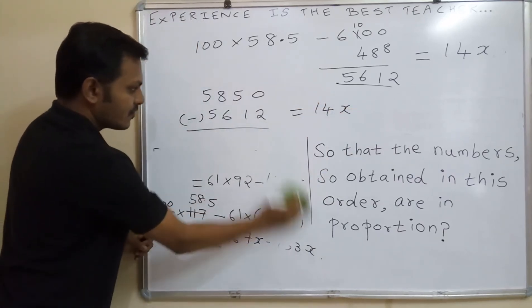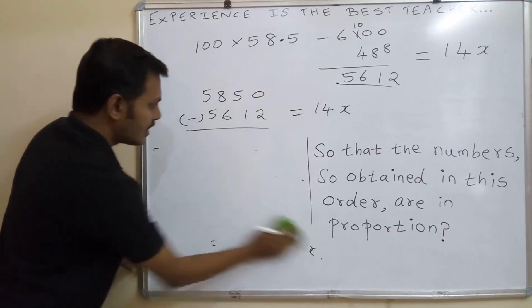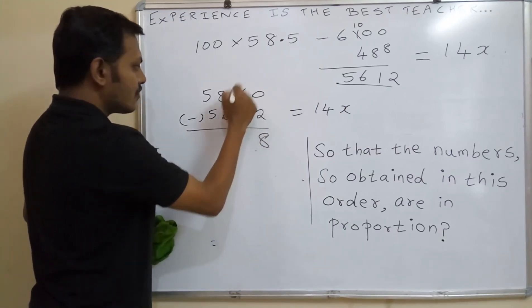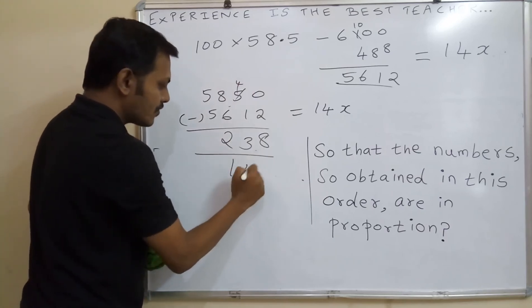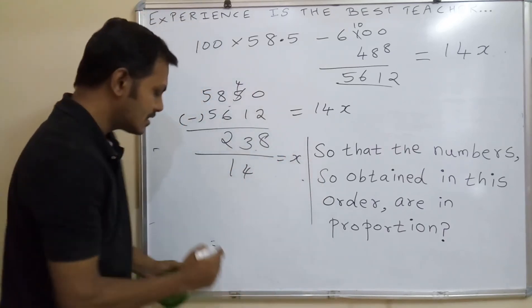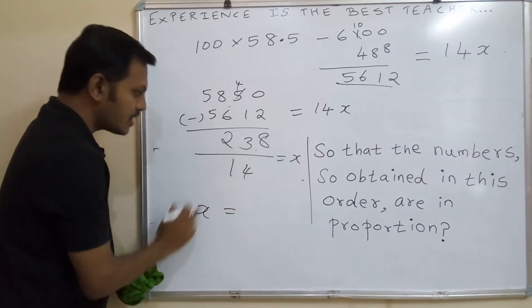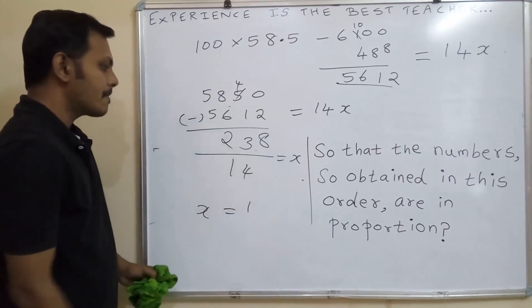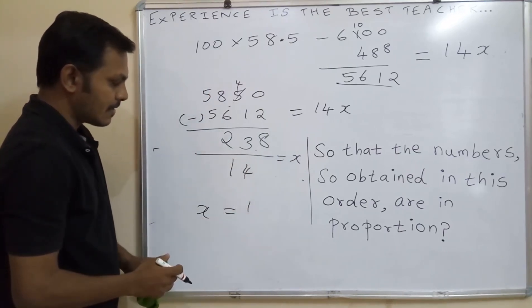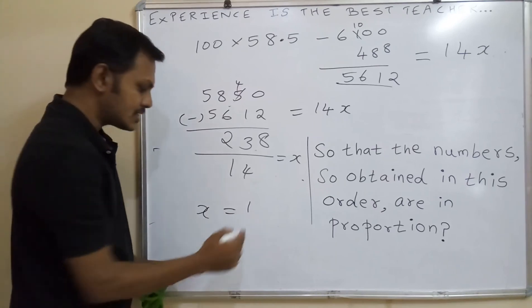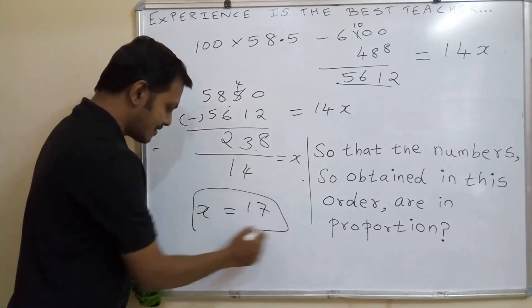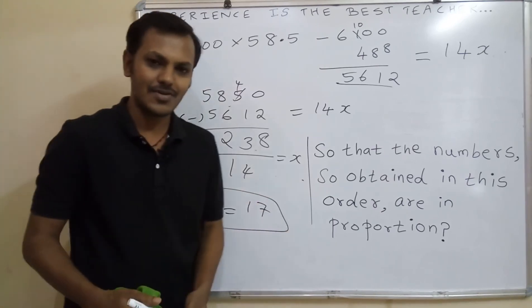So next step will be, subtract this to 10 minus 2 is 8. It will become 4 minus 1 is 3, 8 minus 6 is 2. So 238 by 14 will be our unknown number, what number x. So x equal to, by using this 14 table, 1 times 14 is 14, balance is 98. 7 times 7 is 49, 7 plus 4 is 20, so 98. 7 times 14 is 98. The answer for this question is x equal to 17. Thank you for watching.